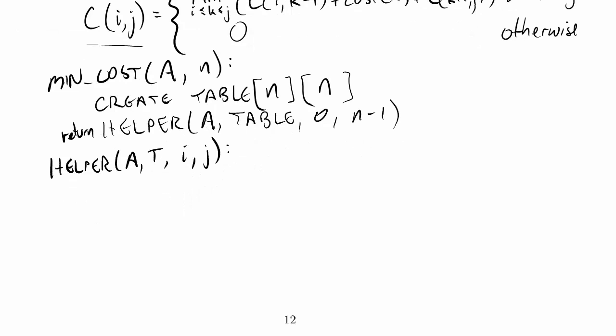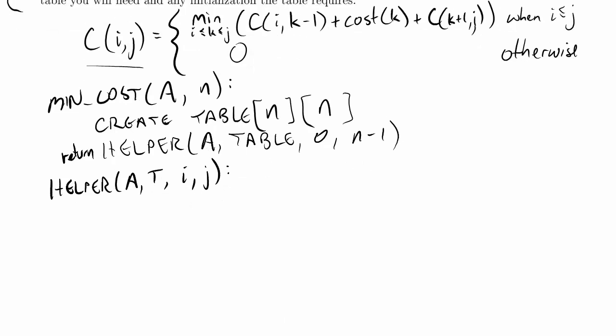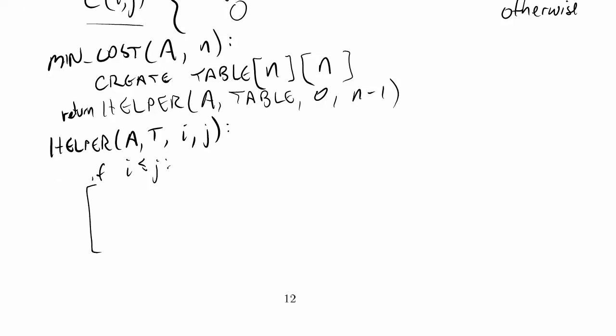I'm just going to give myself a bit more room here. So my helper function needs to test something. What it needs to test is whether i is less than or equal to j. So if i is less than or equal to j, well that's the big recursive case.